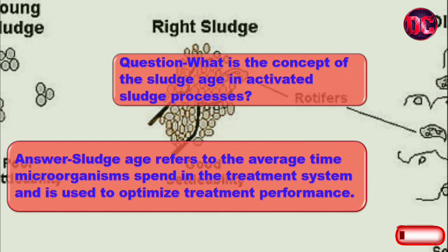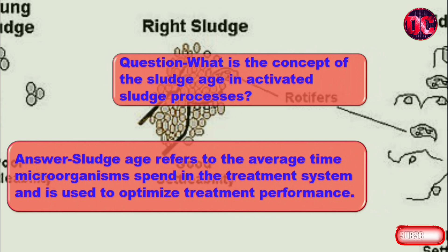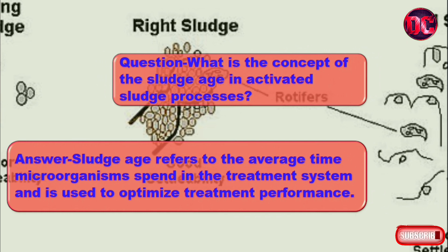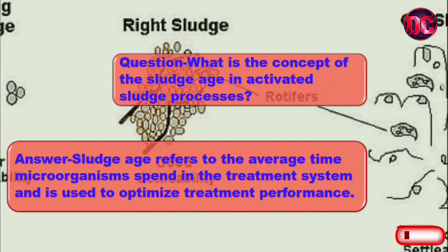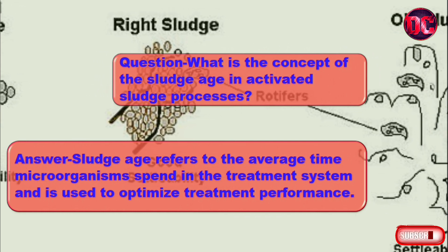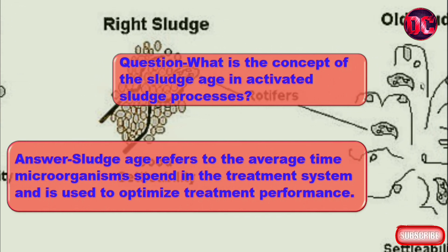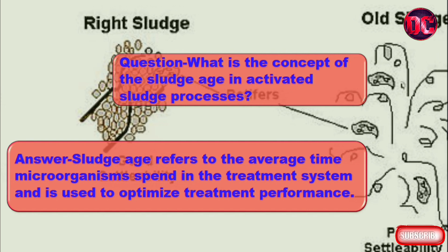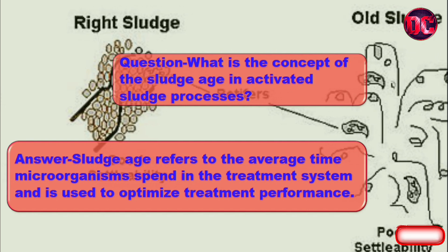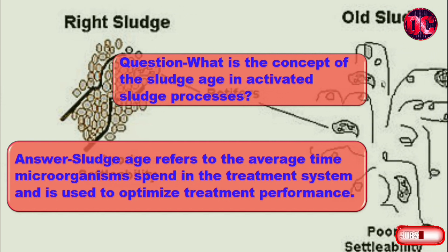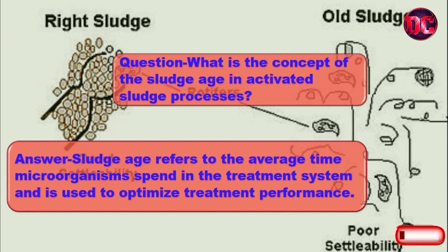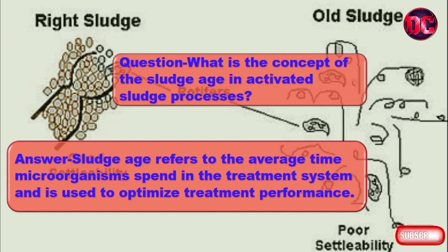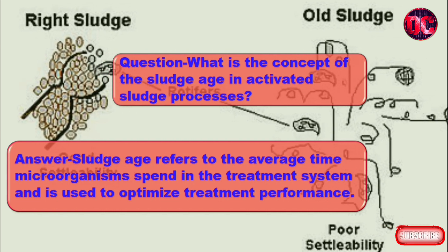Question: What is the concept of sludge age in activated sludge processes? Answer: Sludge age refers to the average time microorganisms spend in the treatment system and is used to optimize treatment performance.